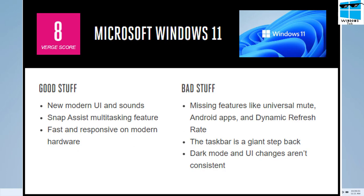However, missing features like universal mute, Android app support, and dynamic refresh rate create a bit of a letdown. The taskbar is also a giant step back — you can no longer move it to the left, top, or right corners, though you can move the Windows icons from the center to the left.